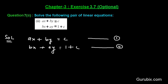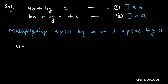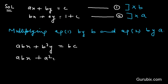We shall apply the elimination method to solve this pair of linear equations. For that, we shall multiply equation number 1 by b and equation number 2 by a. So we have abx plus b-squared y equals bc, and abx plus a-squared y equals a plus ac.